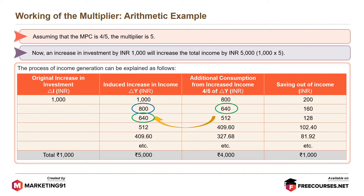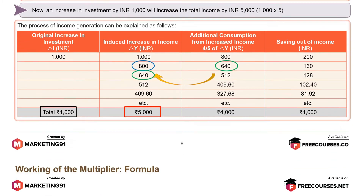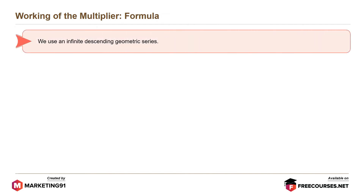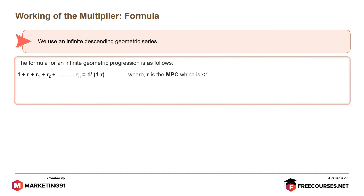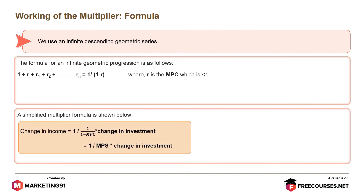Thus, an increase in original investment by Rs. 1000 will increase the total income to Rs. 5000. This is the multiplier effect. By formula, the multiplier can be expressed as an infinite descending geometric series. The formula for an infinite geometric progression is: 1 plus R plus R1 plus R2 up to Rn equals 1 divided by 1 minus R, where R is the MPC which is less than 1. A simplified multiplier formula is: change in income equals 1 divided by (1 minus MPC) multiplied by change in investment, which equals 1 divided by MPS multiplied by change in investment.